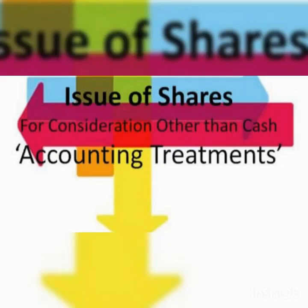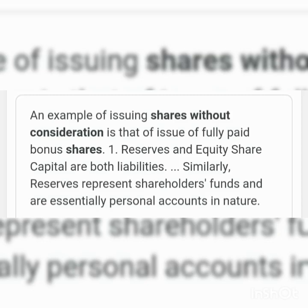Hi friends, welcome to the accountancy class. Today we are going to learn about the term 'issue of shares for consideration other than cash.' In this topic, we are studying how a company can issue shares for consideration other than cash. A company can issue shares at par or at a premium. There are instances where a company enters into an agreement with vendors from whom it has purchased assets, whereby the vendor agrees to accept payment in the form of fully paid shares. No cash is received for such an issue of shares.